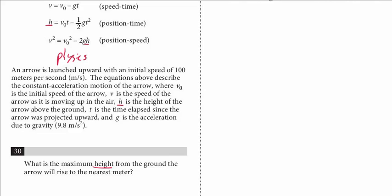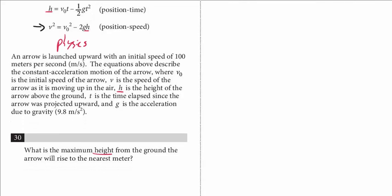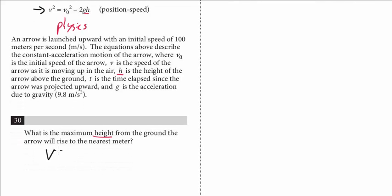So let's start with this equation here. We have v², and we're told that v is the speed of the arrow as it's moving up in the air. And we're trying to solve for the maximum height. So recognizing, think about the arrow, it's going upward, upward. It reaches the maximum height, this apex, and then turns back down. What is that speed at the apex? It's zero. So that is zero.